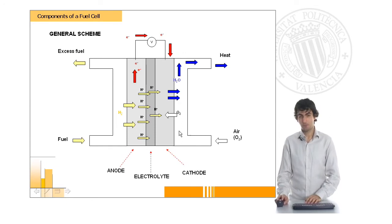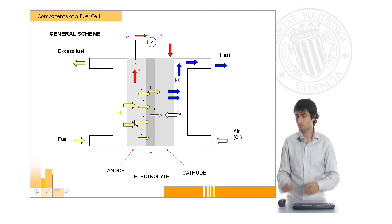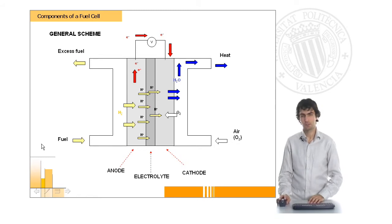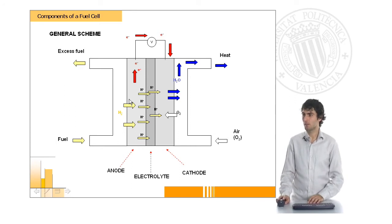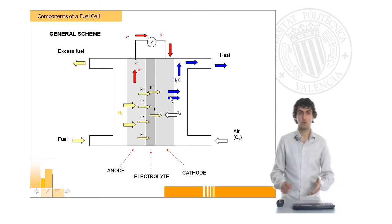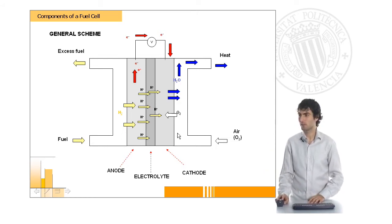This is the main scheme of a fuel cell, of a single unit fuel cell, where you could see how in the central part there is the electrolyte sandwiched by the two electrodes, the anode and the cathode. The fuel, usually hydrogen, is oxidized here and some electrons are produced. These electrons are going to be driven from an external circuit to the cathode where they will react with the oxygen from the air which is coming to this compartment.